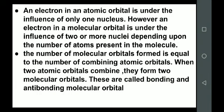So the electrons are under the influence of as many nuclei as there are atoms involved in the formation of the molecule. The number of molecular orbitals formed is equal to the number of combining atomic orbitals — whatever number of atomic orbitals combine, the same number of molecular orbitals will be formed. If two atomic orbitals combine, two molecular orbitals will result.